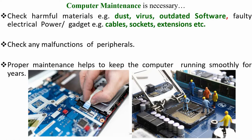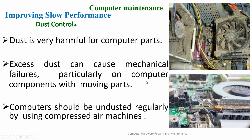One of the tips that will help you maintain the computer properly is checking for harmful materials like dust, viruses, outdated software, faulty electrical power, and gadgets such as cables, circuits, and extensions. Another method is to check for any malfunctions of peripherals. Proper maintenance helps to keep the computer running smoothly and improves slow performance.